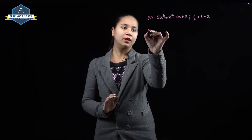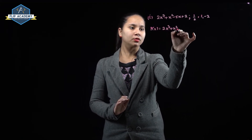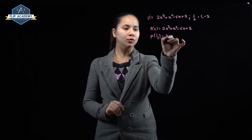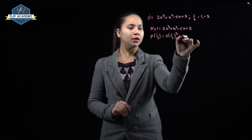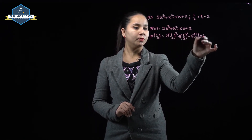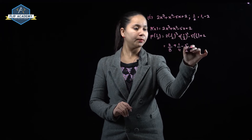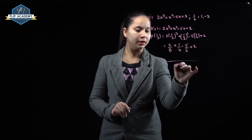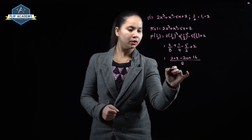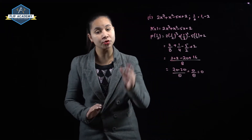Checking p(x) = 2x³ + x² - 5x + 2. Now p(1/2) = 2 × (1/2)³ + (1/2)² - 5 × (1/2) + 2 = 2/8 + 1/4 - 5/2 + 2. Taking LCM as 8: (2 + 2 - 20 + 16)/8 = 0/8 = 0. So 1/2 is a zero of this polynomial.